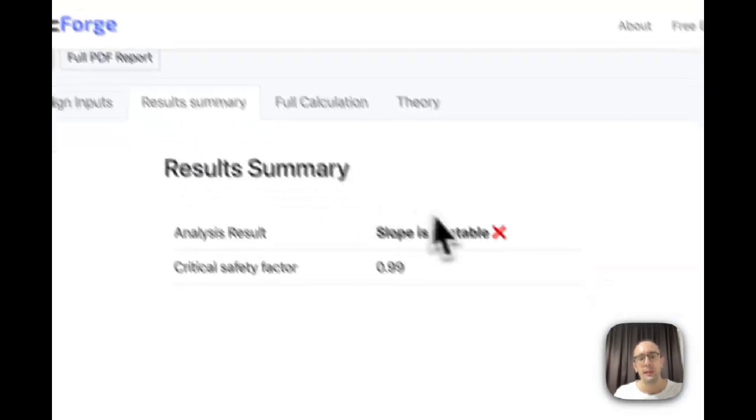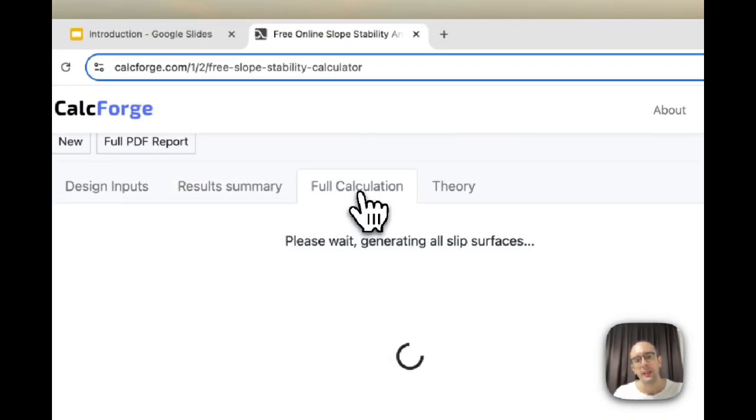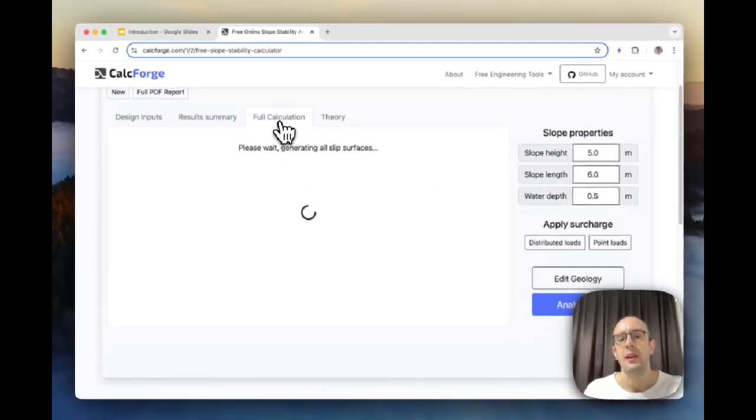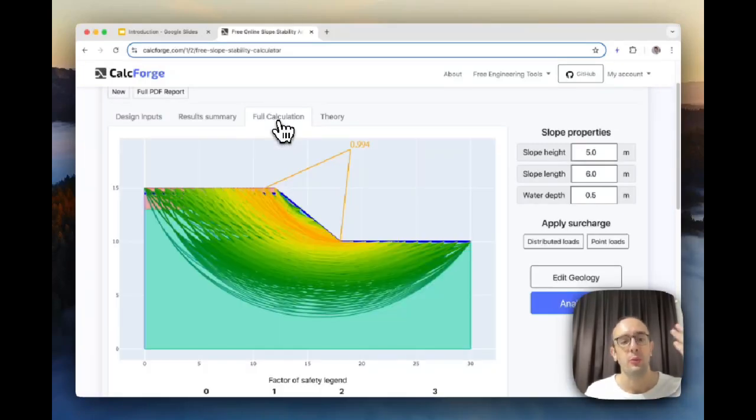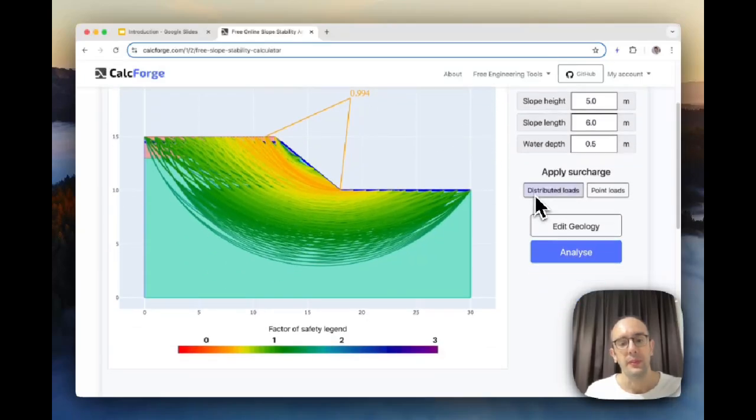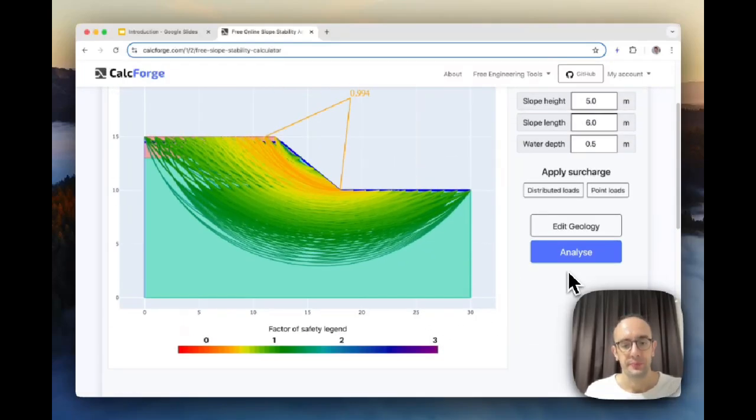We can click to result summary and it will basically confirm that the slope is unstable. Here's the critical factor of safety. What you can also do is click this full calculation button and what this will do is it will generate a preview of all the slip surfaces which this analysis is considered. It's going to run like a hundred or thousand different analyses and it will show you here the factor of safety of each one of those which it's analyzed. You'll see here there's a scale, red being closer to zero, three being on the higher end.